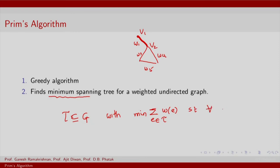Such that for every vertex V in G, there exists an E in T that covers V.